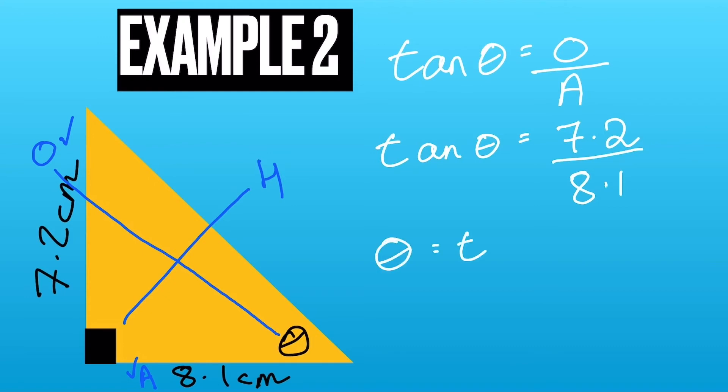So we do the inverse tan or tan to the minus 1 using our shift tan button. 7.2 divided by 8.1. And you get the answer which is on screen now.